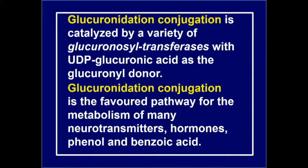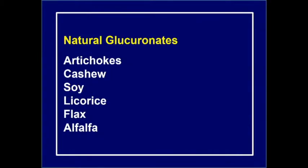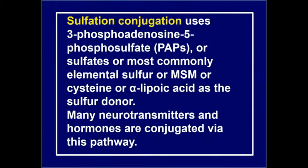Glucuronidation uses glucuronic acid. This is very rich in artichokes — the best natural source of glucuronic acid is actually artichokes. A lot of hormones and neurotransmitters are detoxified this way. Foods containing glucuronic acid include artichokes, cashew nuts, soy, licorice, flax, and alfalfa.